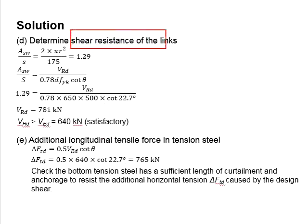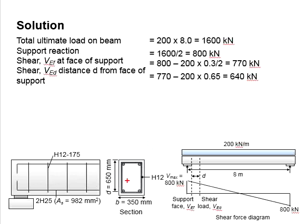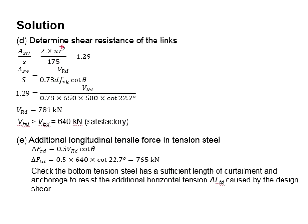Next, you need to check for the shear resistance of the links. First, quantify the area of the shear link over the spacing. As the shear link is provided in a loop, the area of the reinforcement bar will be equal to πr² times 2, divided by the spacing S. You will obtain the ratio of Asw per S equals to 1.29.